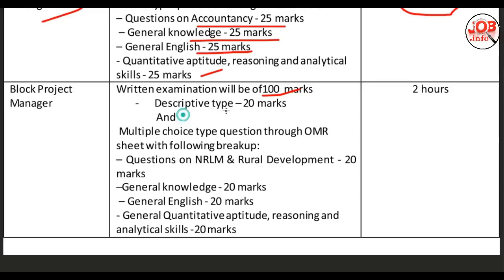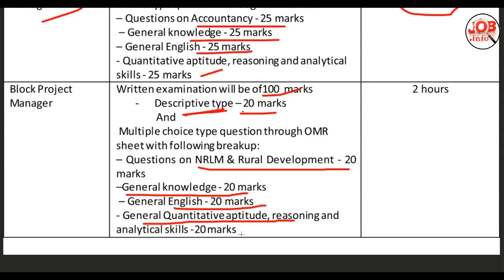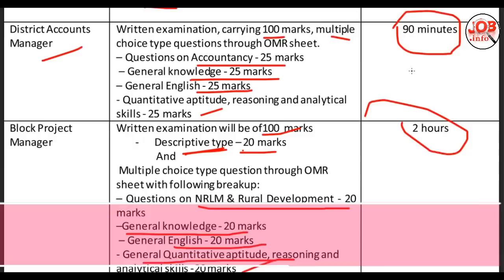NRLM and Rural Development is 20 marks. General Knowledge is 20 marks. General English is 20 marks. General Quantitative Aptitude, Reasoning and Analytical Skill is 20 marks. Total is 100 marks, and the exam duration is 90 minutes.